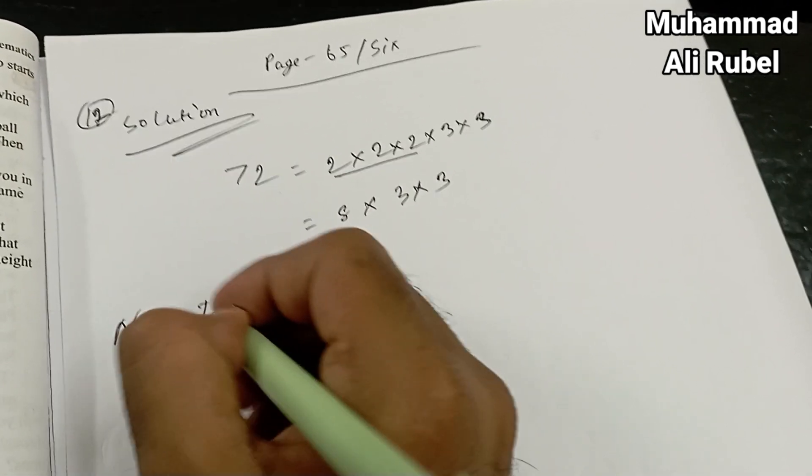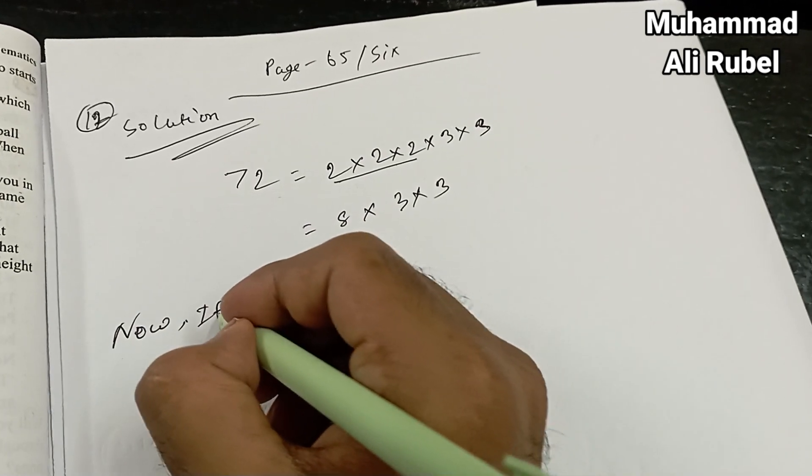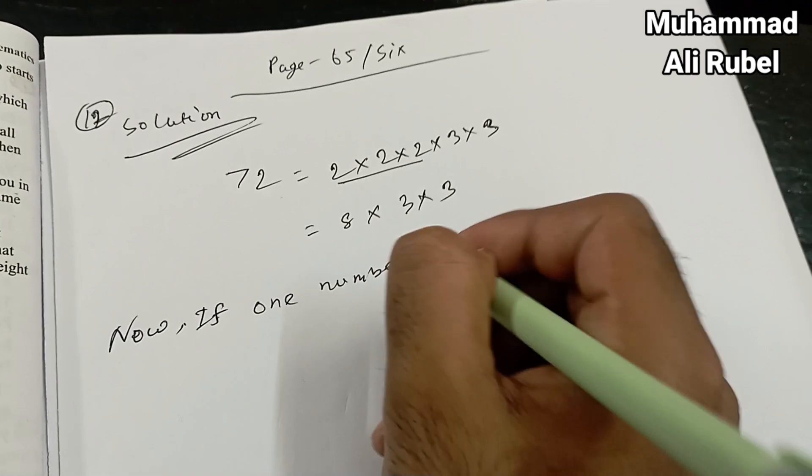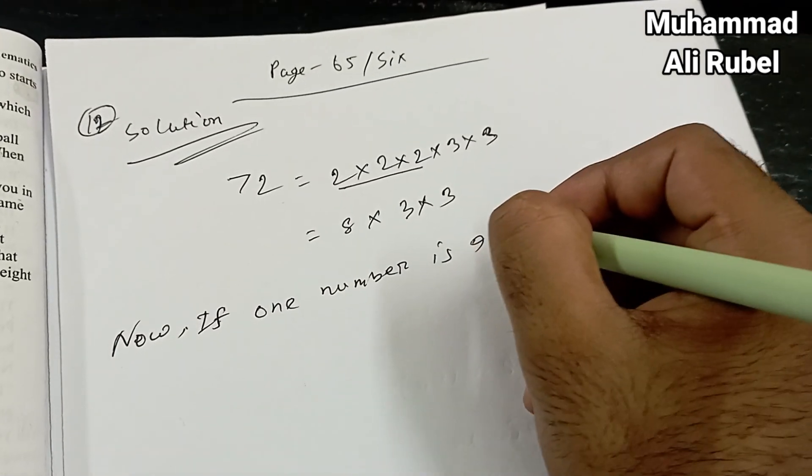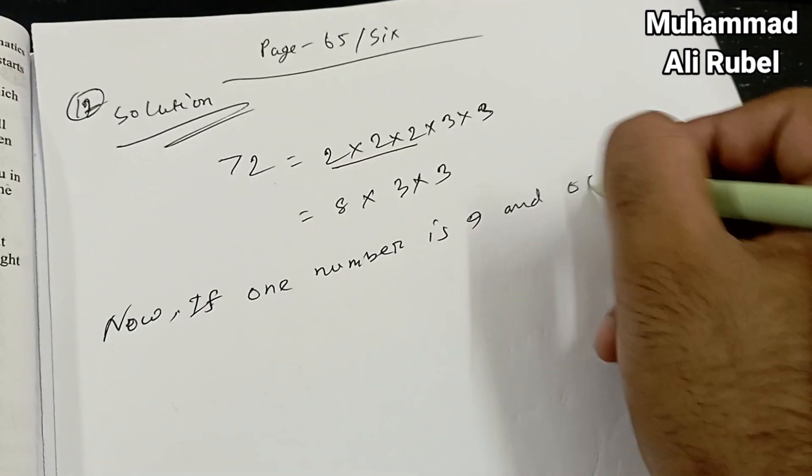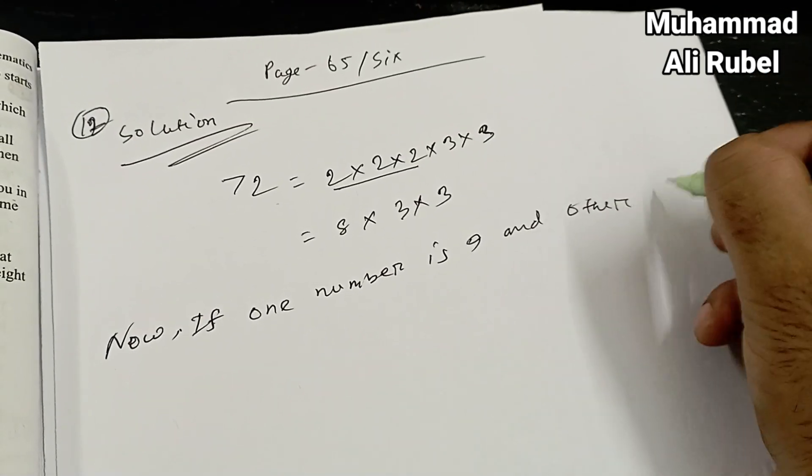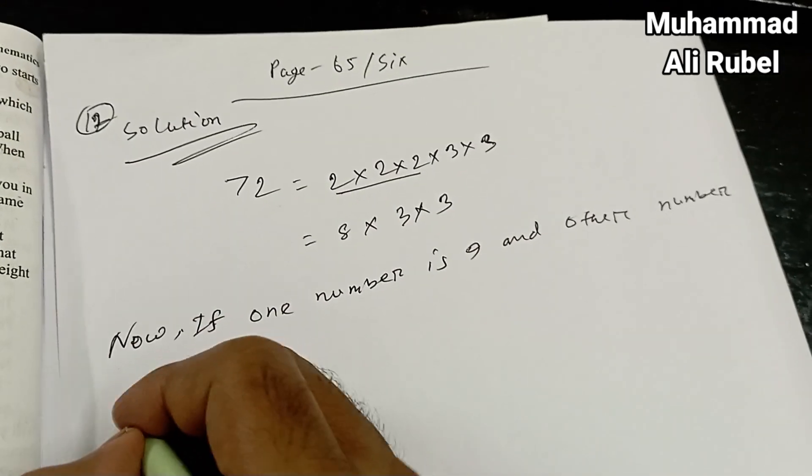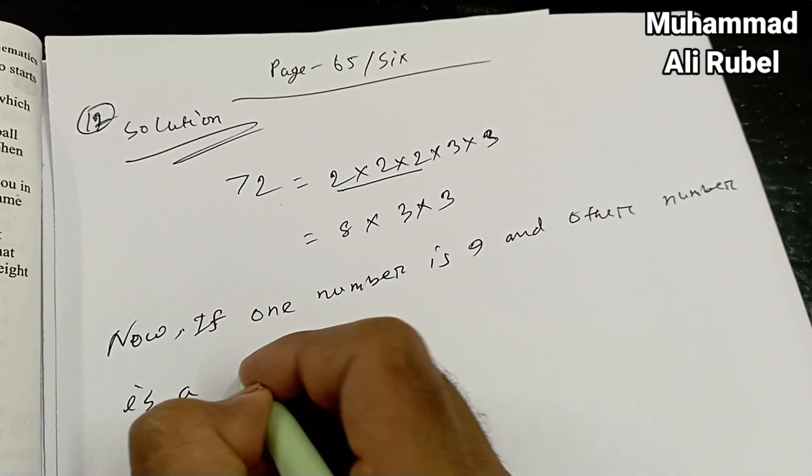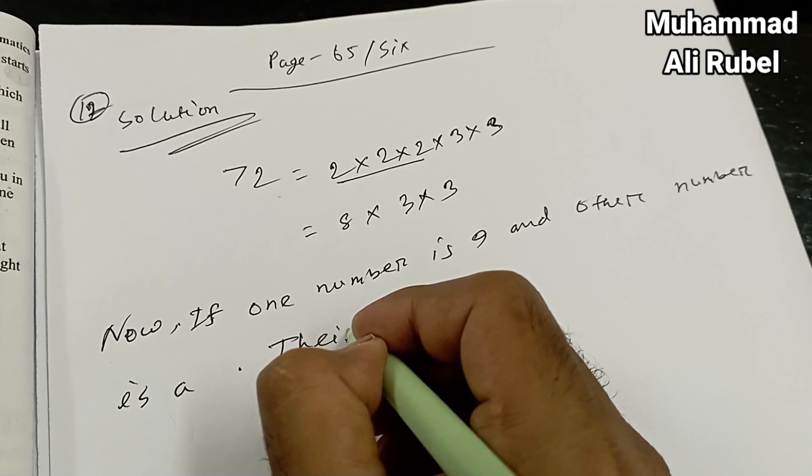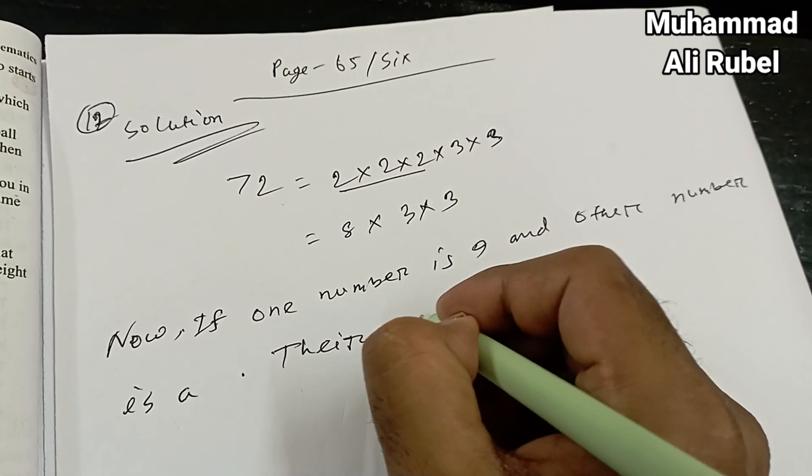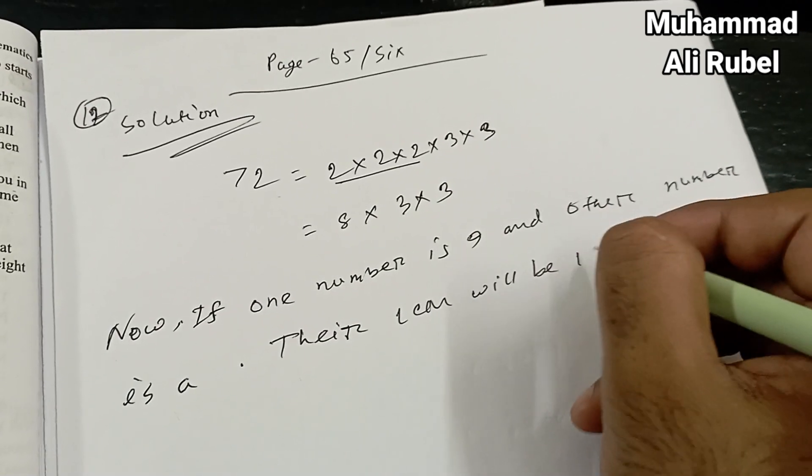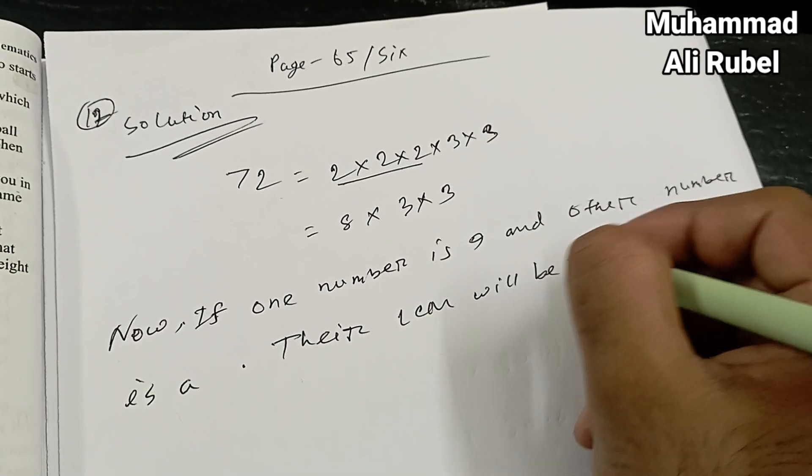Now if one number is nine and other number... their LCM will be 72.